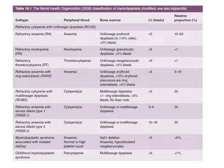Refractory neutropenia: in peripheral blood, we will see neutropenia — less number of neutrophils. In bone marrow, we will see unilineage granulocytic dysplasia — only the granulocyte series is involved with abnormalities of the granulocyte precursors — but the blast count is still less than 5 percent. This is very rare — less than 1 percent of patients may be like this.